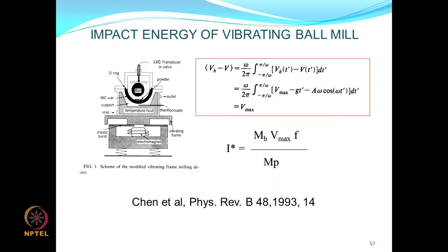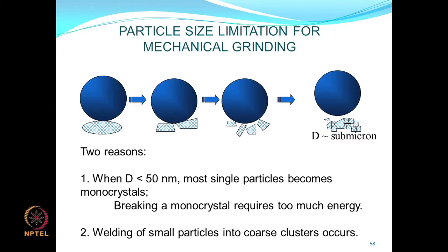Vibrating ball mills can also be used to produce fine particles starting from larger ones. This could be another mechanism to make nanoparticles, using the vibrational energy of the ball to perform comminution, which is another word for size reduction.